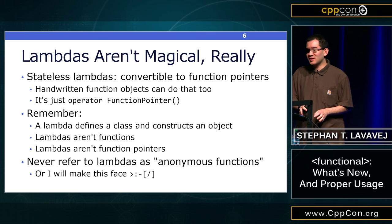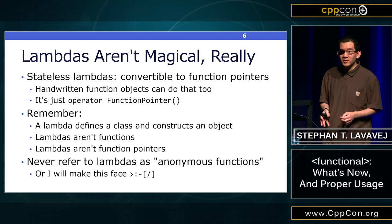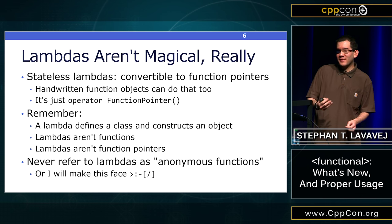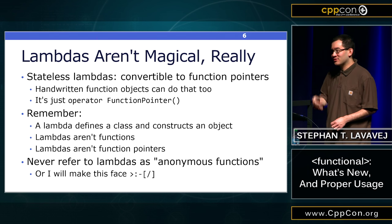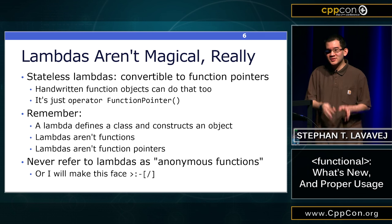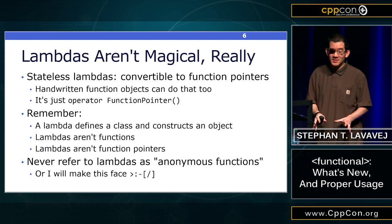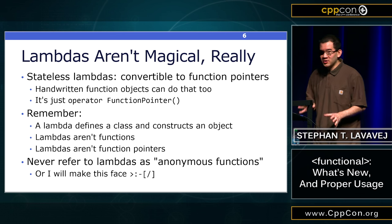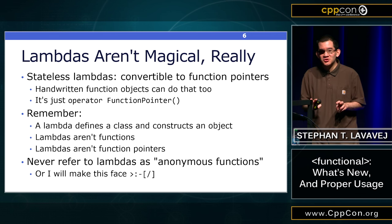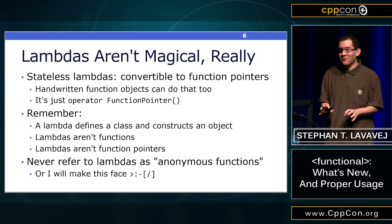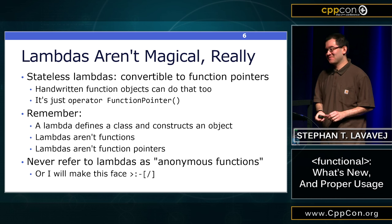Lambdas do have a couple of tricks. If you have a stateless lambda, it can be converted to an ordinary function pointer, but that's not super magical — you could write a conversion operator by hand if you know the syntax. Remember: a lambda just defines a class and constructs an object of that class. It's a class type — not a built-in function, not a function pointer. Some people refer to lambdas as 'anonymous functions' — do not do that. They're classes.